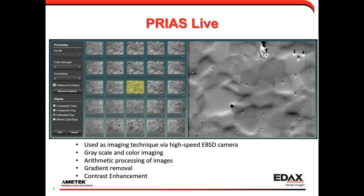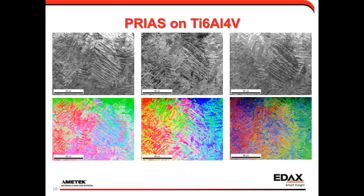Using PRIUS in a mode called PRIUS Live as an imaging technique, we're able to create grayscale and color images. We can do processing such as adding, subtracting, or weighting, remove intensity gradients from geometrical effects, and do contrast enhancements. It's a technique where we can get an image in a minute or two with a lot of information. Showing these different PRIUS images on Ti-64, depending on which quadrants we select and coloring schemes we use, the microstructure and laths inside different grains show up nicely for very quick microstructural imaging.